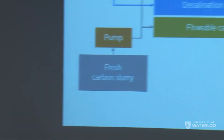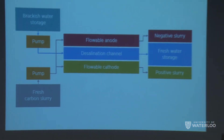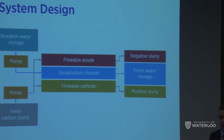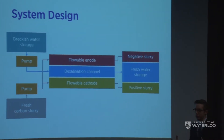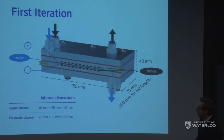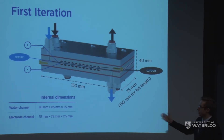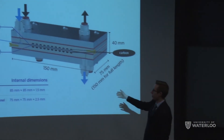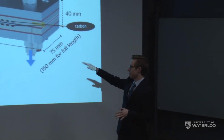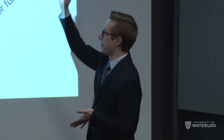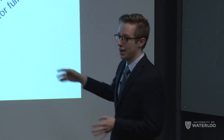Looking at the simple input and output of the system: we input fresh slurry into the flowable electrodes along with the brackish water. When we remove the slurry, we keep it separate since the energy input can be recaptured later. This is the first iteration of our flow cell — a render showing a cross-sectional view. Blue arrows bring water into the center channel, and the two electrode channels in which the carbon slurry flows are carved on each side, with carbon flowing in and out of the system.